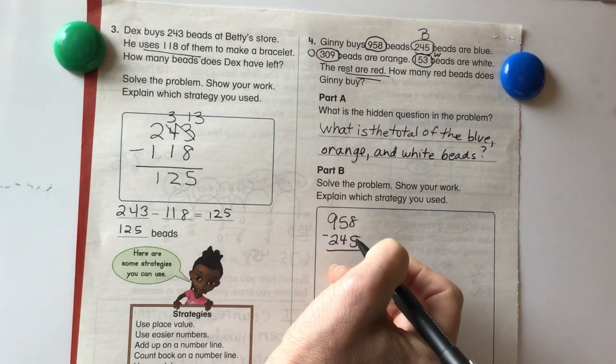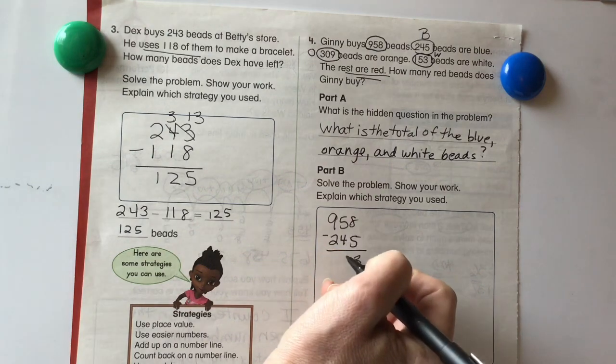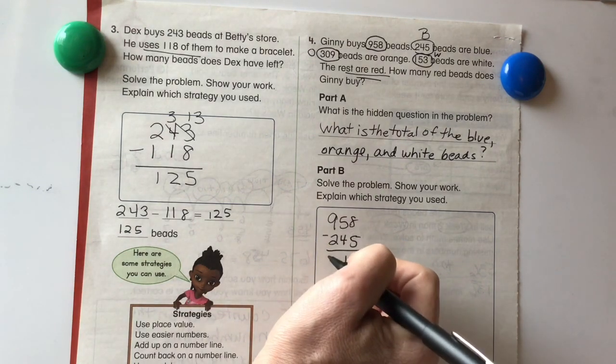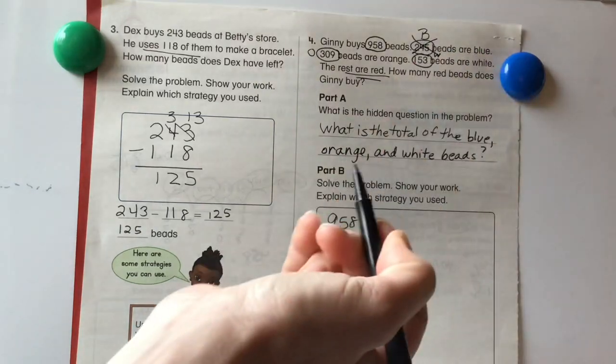Okay, so what we need to do is find the total of those, and that will let us know how many red are left. So our total is 958, and we're going to subtract first our blue beads. Minus 245. So 8 minus 5 is 3. 5 minus 4 is 1. 9 minus 2 is 7. Okay, so we did our blue beads. I'm going to cross that one out.